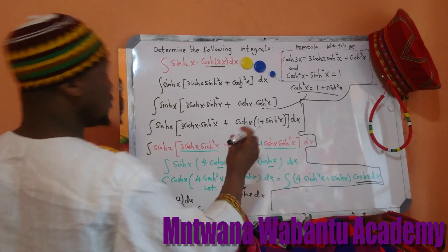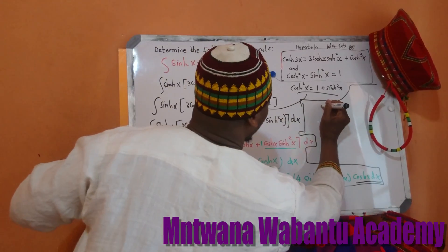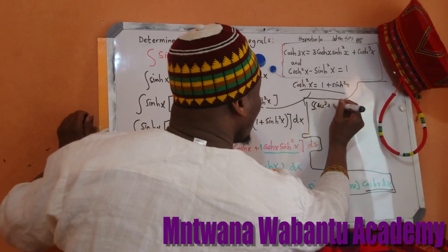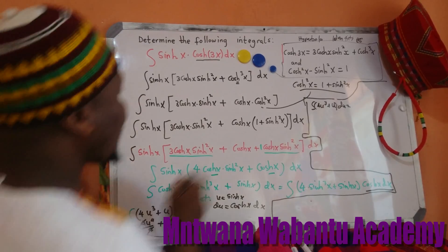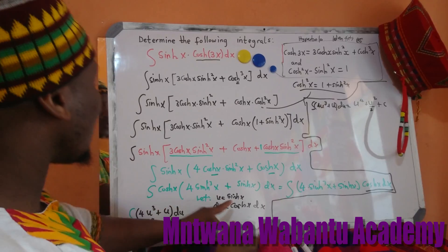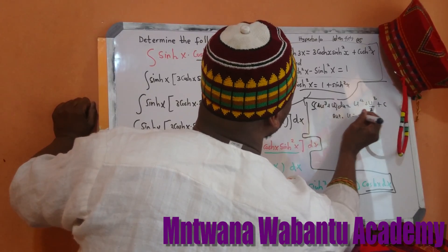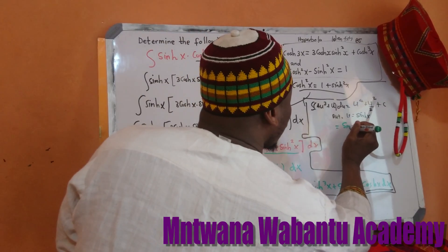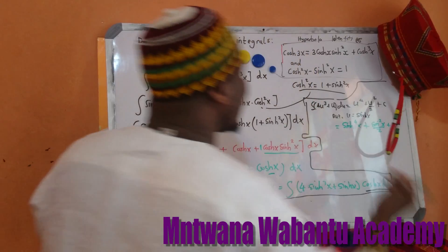So integrating: four u to the power of four over four — the fours cancel — giving u⁴ plus u²/2 plus constant. Now we substitute back: u equals sinh(x). So the final answer is sinh⁴(x) plus sinh²(x) over 2, plus constant.